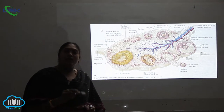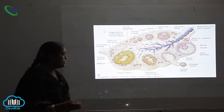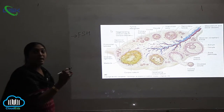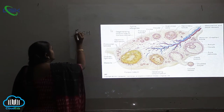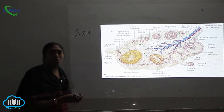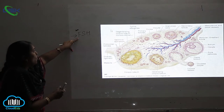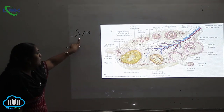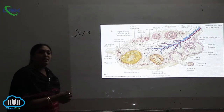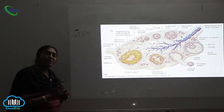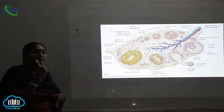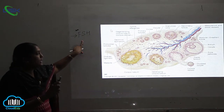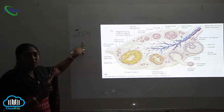In females, a particular hormone called follicle stimulating hormone (FSH) plays a very important role during the process of ovulation. This hormone is released from the anterior part of the pituitary gland, and only when FSH is released will the production of ova happen in females.